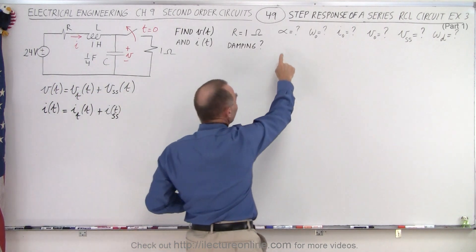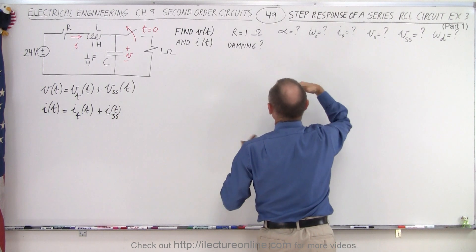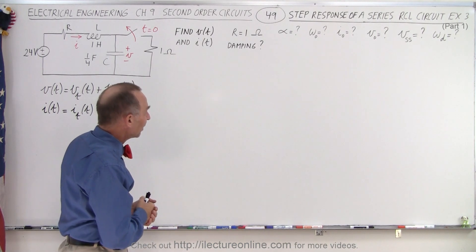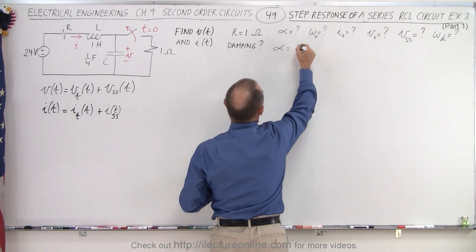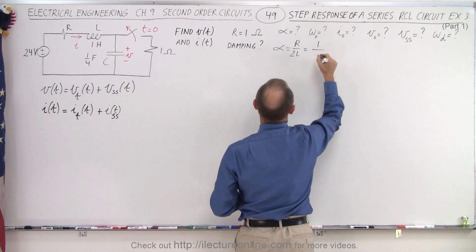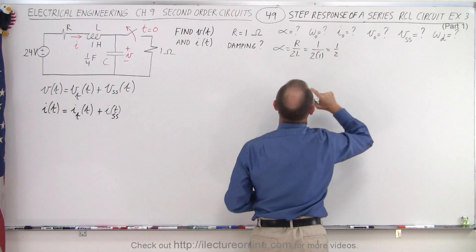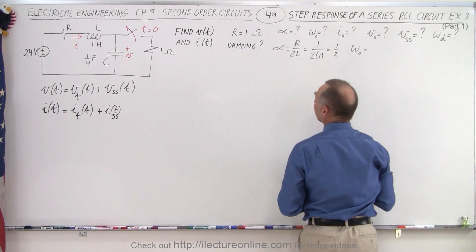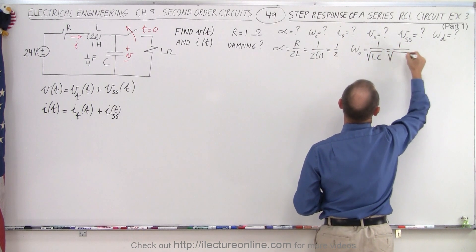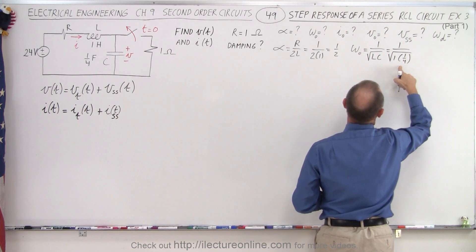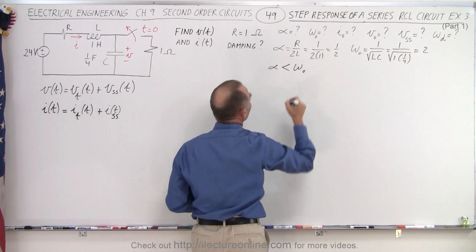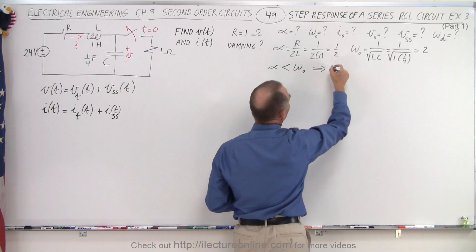It's a good idea to find all the key values first. Since we're dealing with an underdamped case, we need the frequency of oscillation. Alpha is equal to R over 2L, so that's 1 divided by 2 times 1, which equals one half. The natural frequency of the circuit — the frequency without a resistor — is 1 over the square root of LC, which is 1 over the square root of 1 times one quarter, giving us 2. Since alpha is smaller than the natural frequency, we can confirm it's an underdamped case.